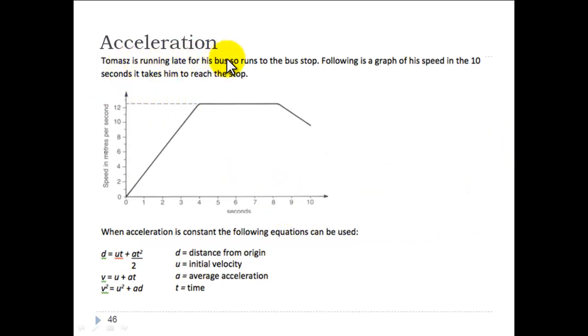Thomas is running late for his bus, so he runs to the bus stop. Following is a graph of his speed in the 10 minutes it takes him to reach the stop. First thing you should do when you're presented with a graph is to look at the axis. On the y-axis, notice that we have speed here, not distance. It's very easy to get those mixed up. And on the bottom we have seconds in time.